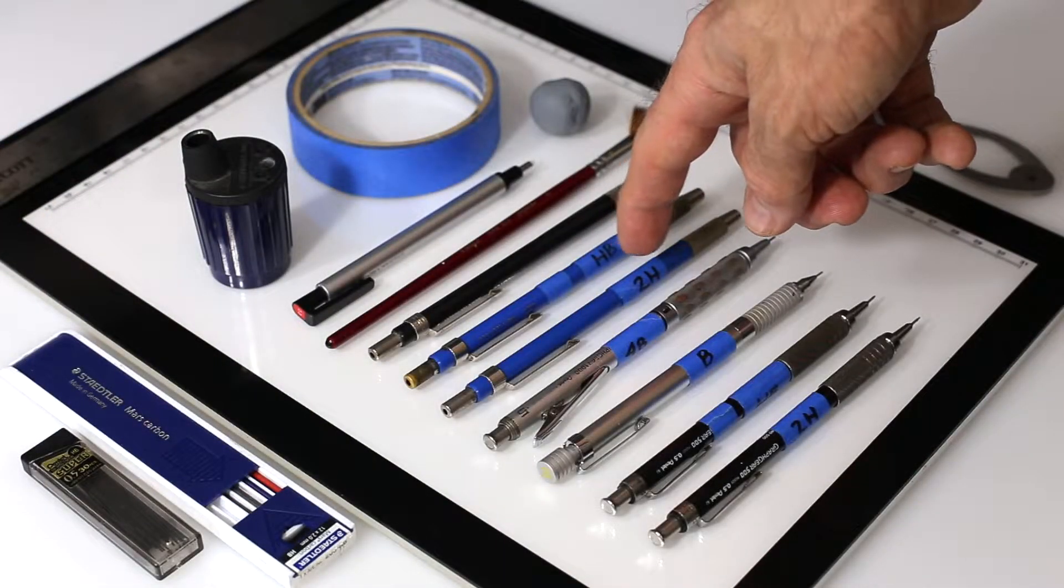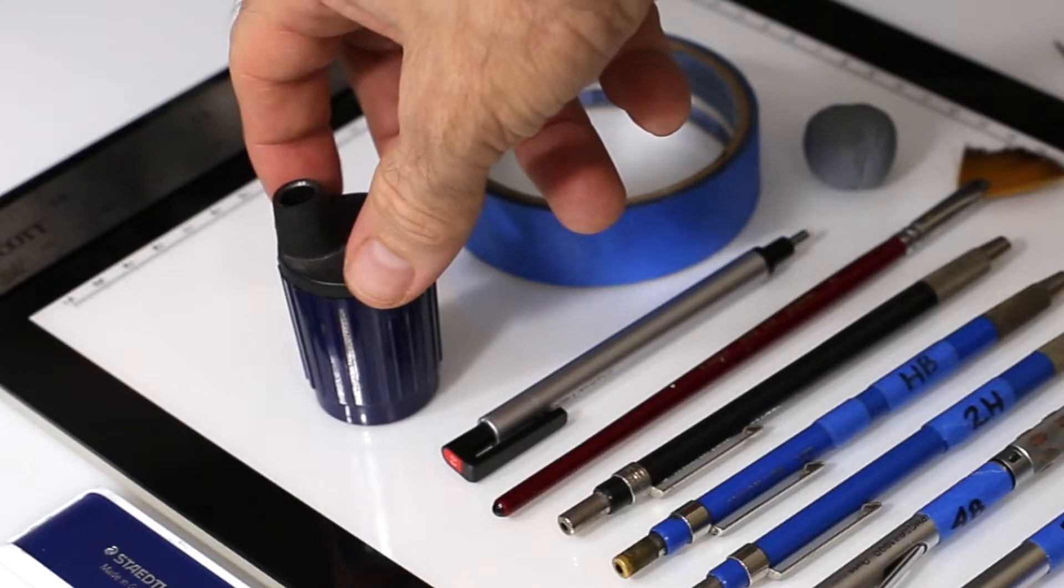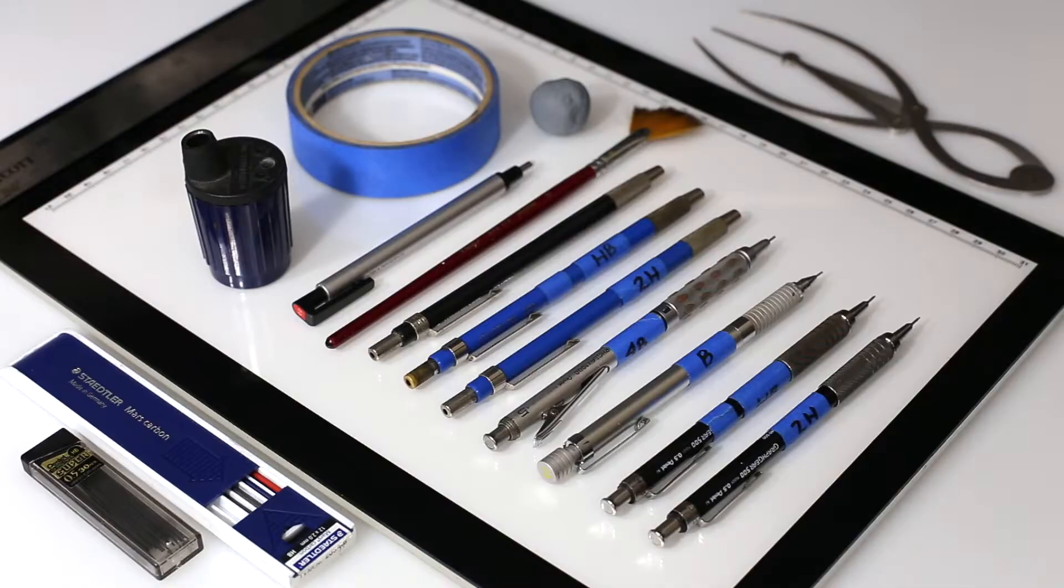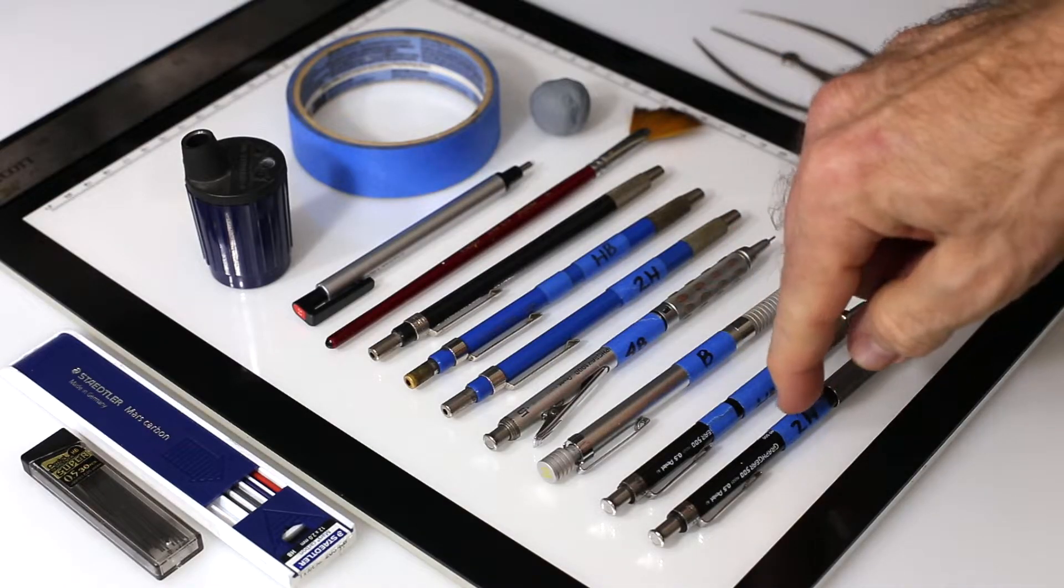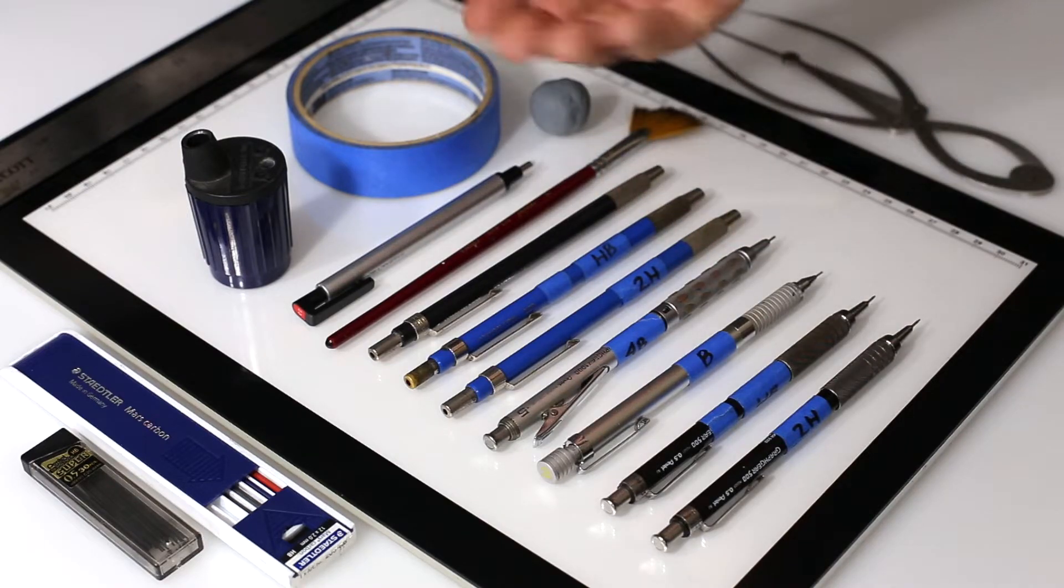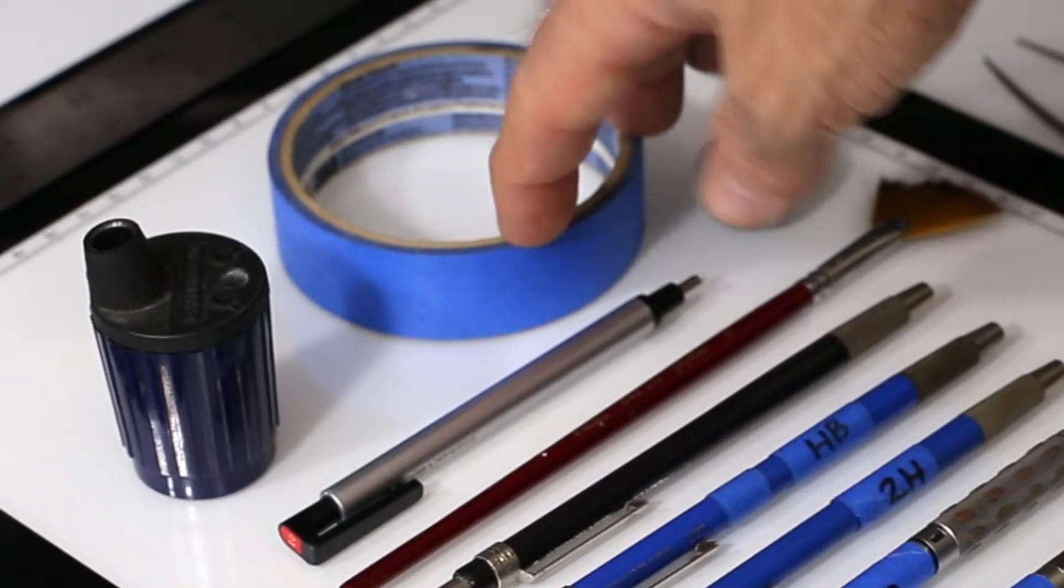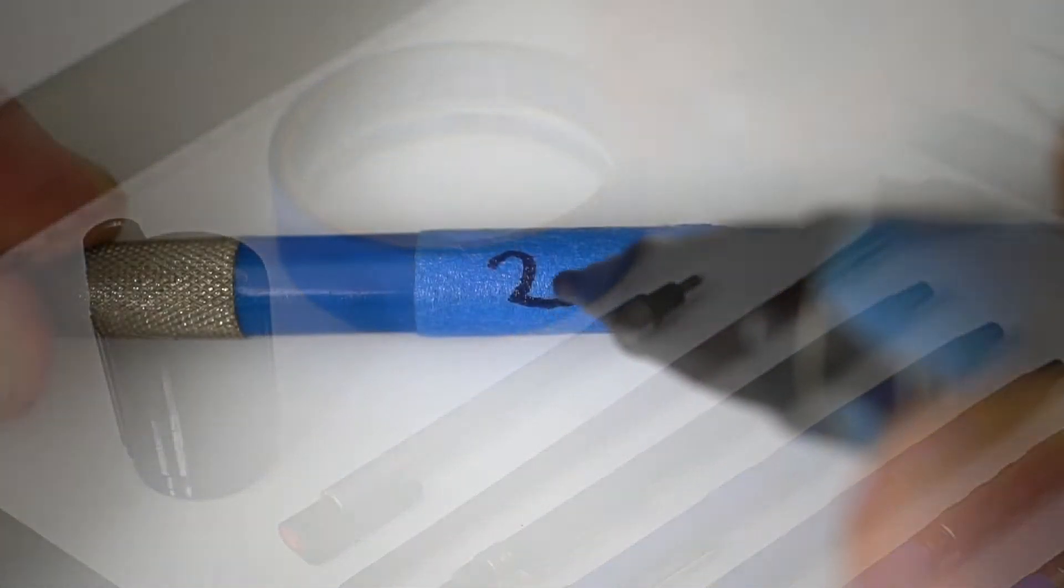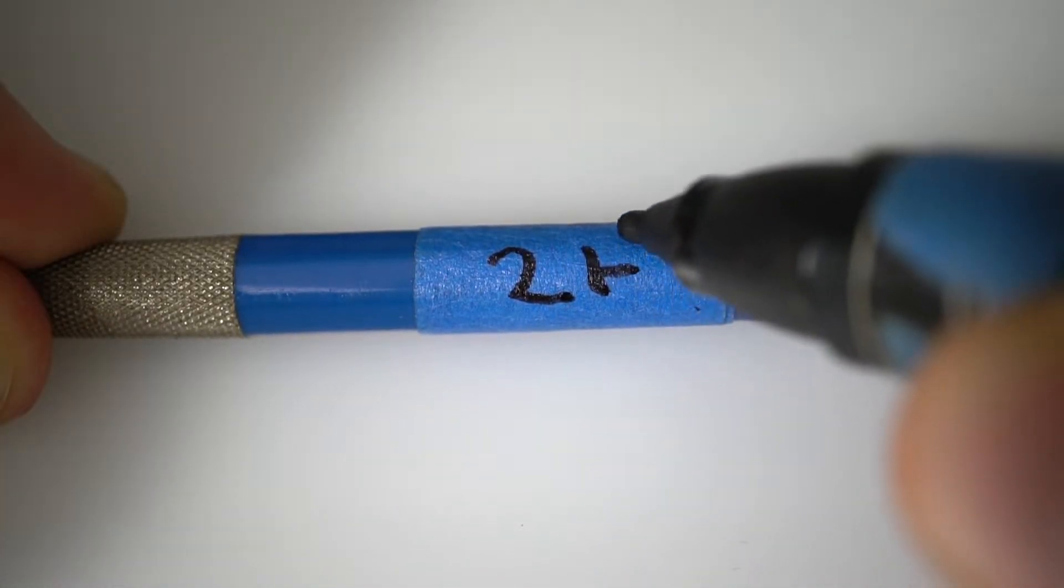To sharpen the lead in these lead holders, you're going to use this lead pointer—it's a pencil sharpener, basically. I identify these pencils so I can quickly grab them while I'm drawing and won't have to stop and slow down to figure out which lead is in there. I use this blue tape, a low adhesive tape. Just wrap it around there and identify it with a marker.